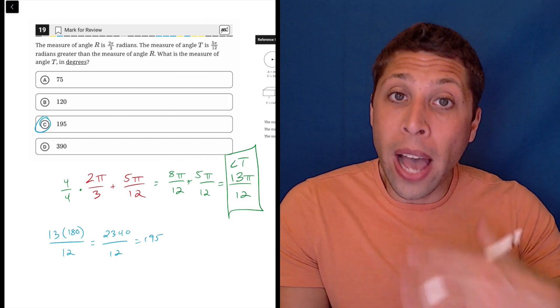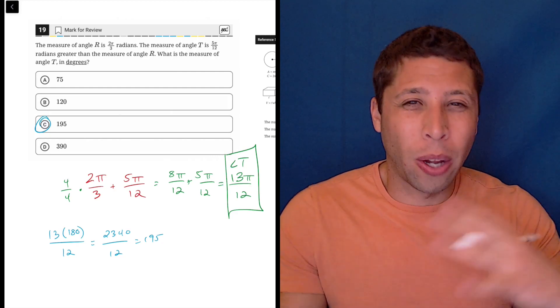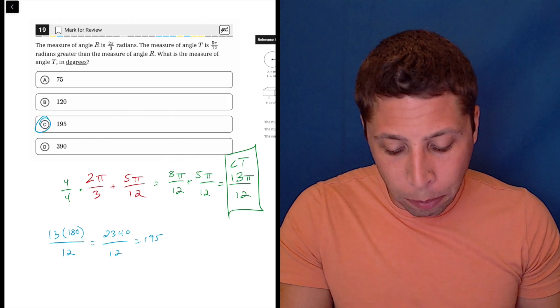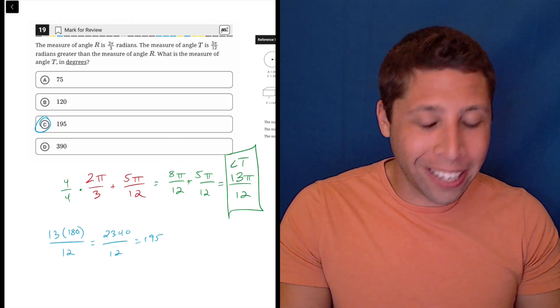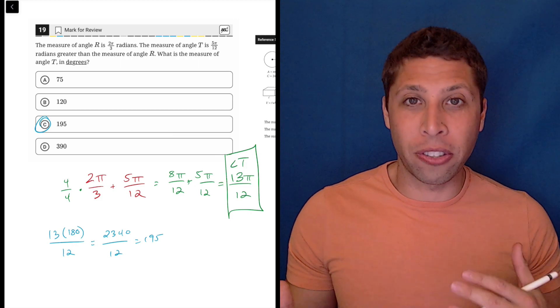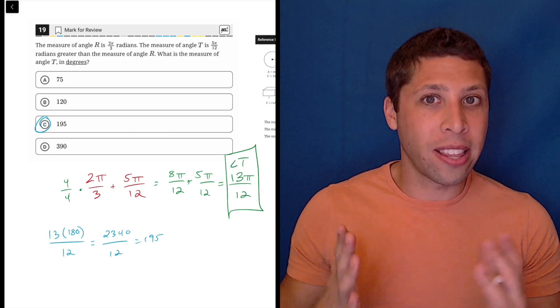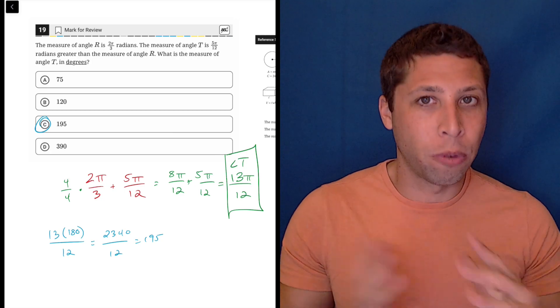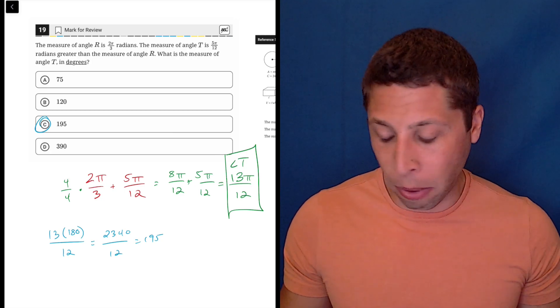Now, I think for some of you that might be confusing. Maybe that like why does that work? It bothers you a little bit or you just have trouble remembering it. There's also the potential where that won't work because sometimes we're given radian measures that don't involve a π.